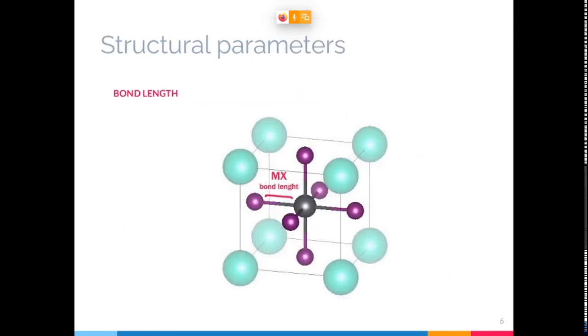Proceeding to our results, I'll first show how the structural parameters are controlled by the chemical composition of the cell. Two parameters are of interest here: the bond length between the halogen and the metal, and the bonding angle between in this chain of halogen-metal and halogen.